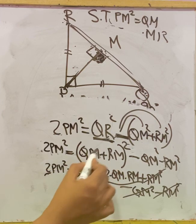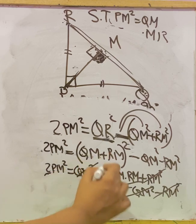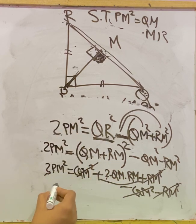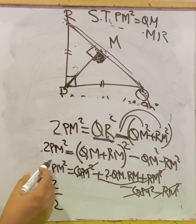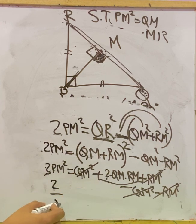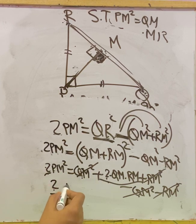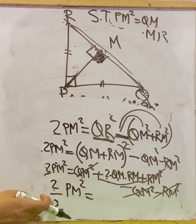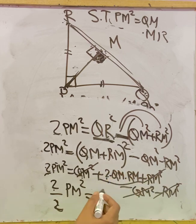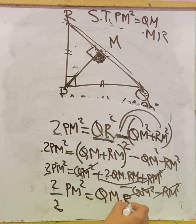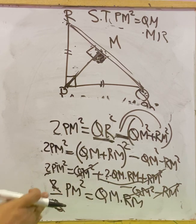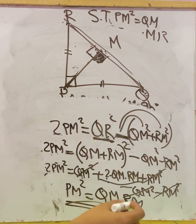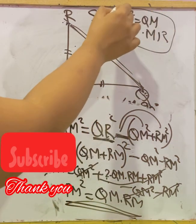So we have 2PM² = 2·QM·RM. The 2 on both sides cancels, giving PM² = QM × RM, which is what we had to prove.